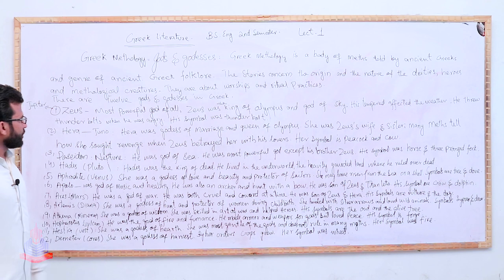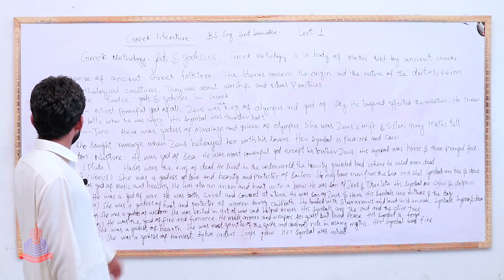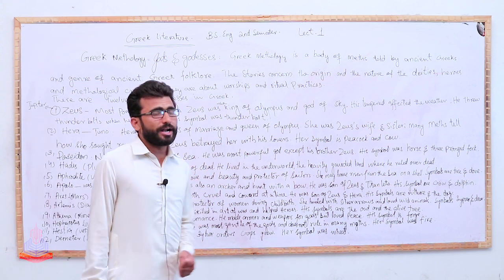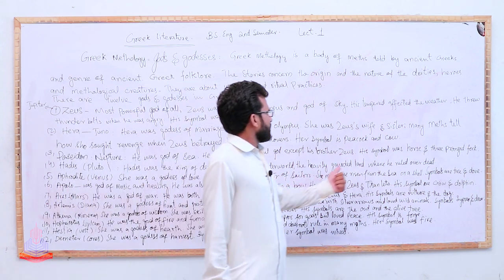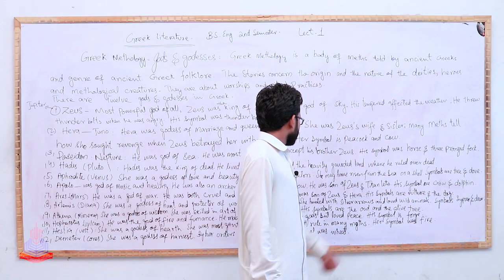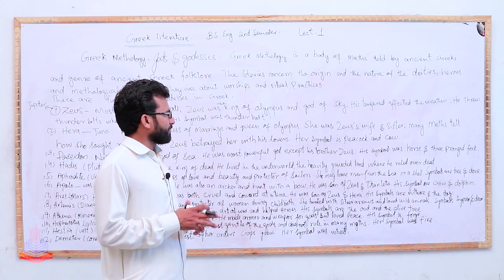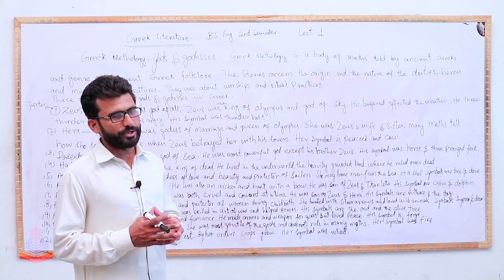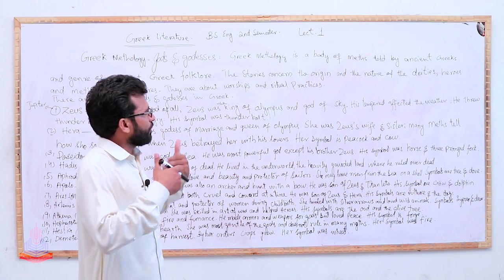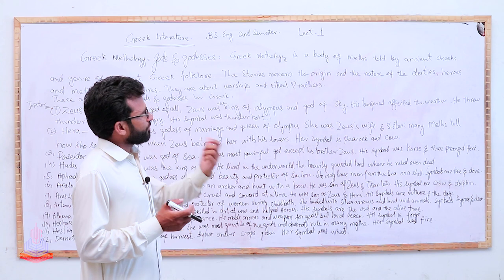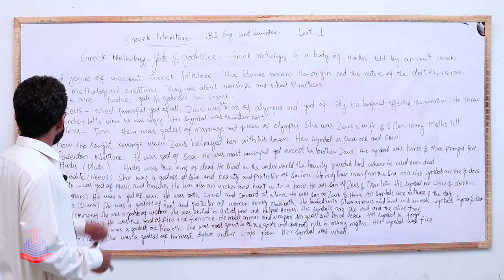Hades, Pluto. Hades was the king of dead. He lived in the underworld, the heavily guarded land where he ruled over the dead.